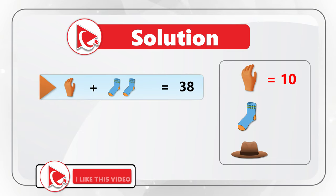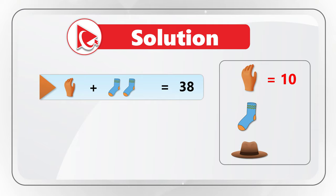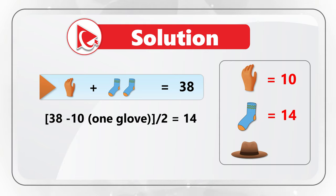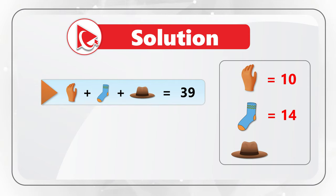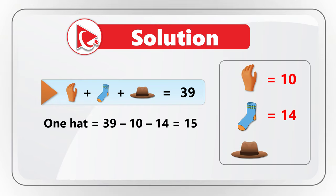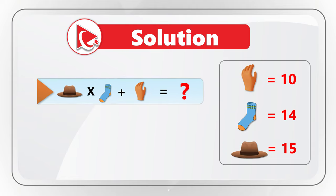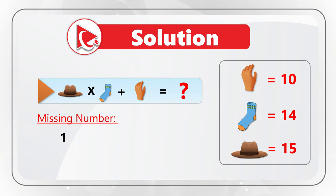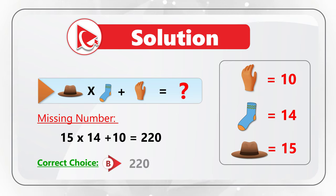From the third expression, 1 glove plus 1 sock plus 1 hat equals 39, so hat equals 39 minus 10 minus 14 equals 15. Now we calculate the missing number: 15 multiplied by 14 equals 210, plus 10 equals 220. The correct answer is choice B, 220. You have four choices: A (135), B (220), C (165), and D (360). Please share any better approaches in comments.